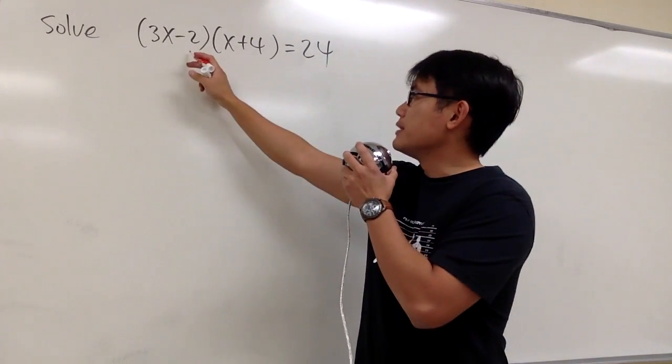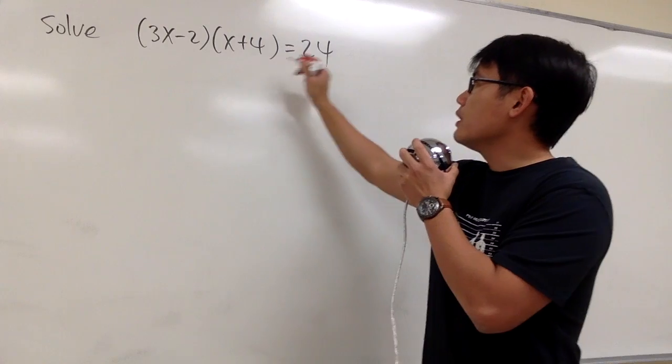We are going to solve this equation. We have 3x minus 2 times x plus 4, and this is equal to 24.